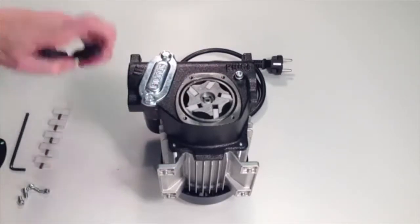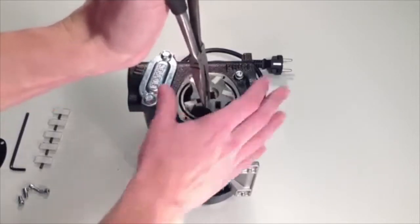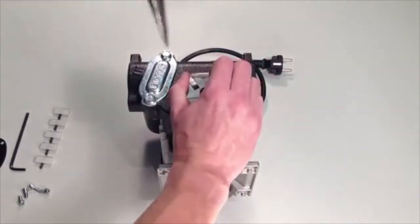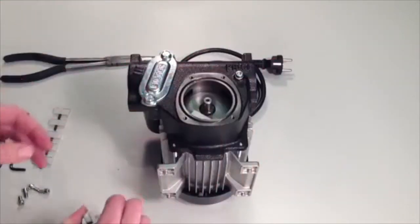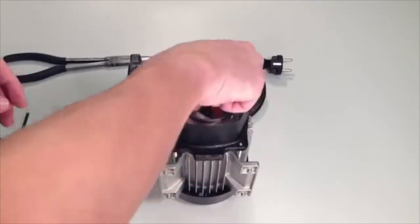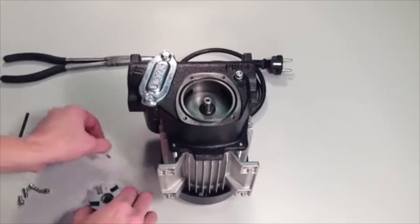Now use the long nose pliers to remove the rotor and vanes from the shaft of the pump. The vanes are spring loaded so they will eject from the rotor if you do not hold them in place. Remove the 5 vanes from the rotor and place the rotor back in the pump.